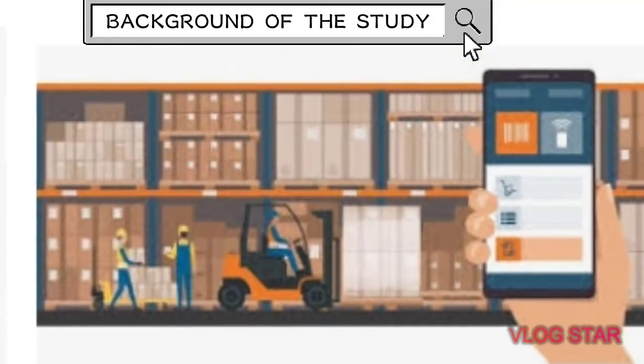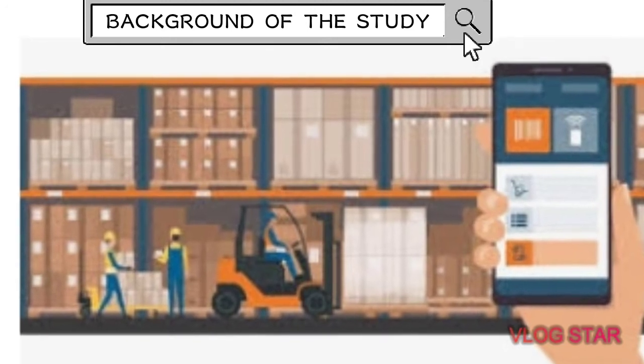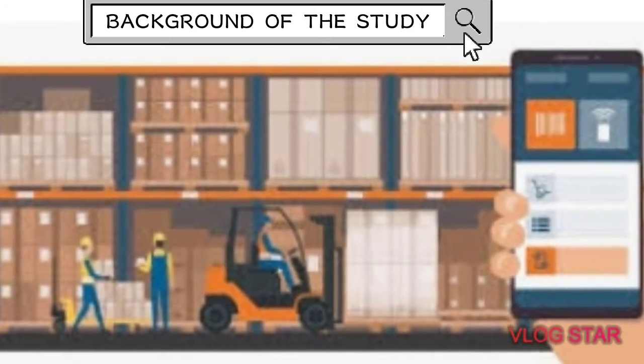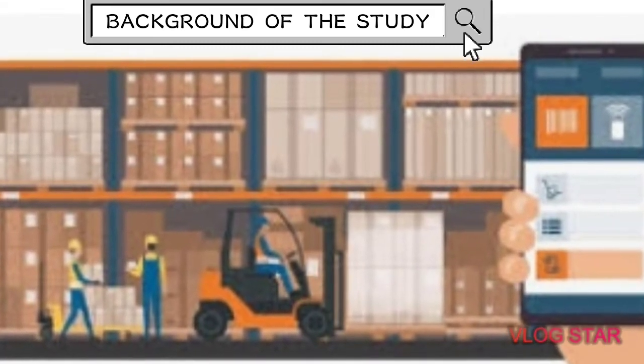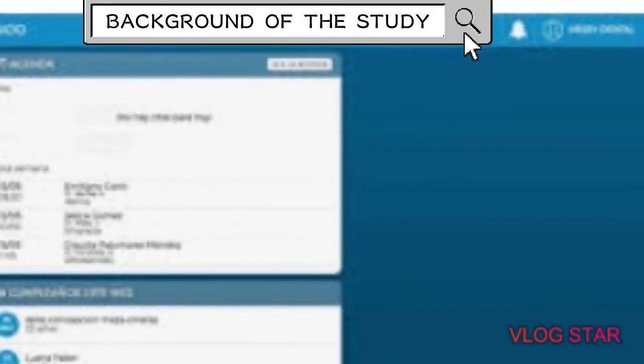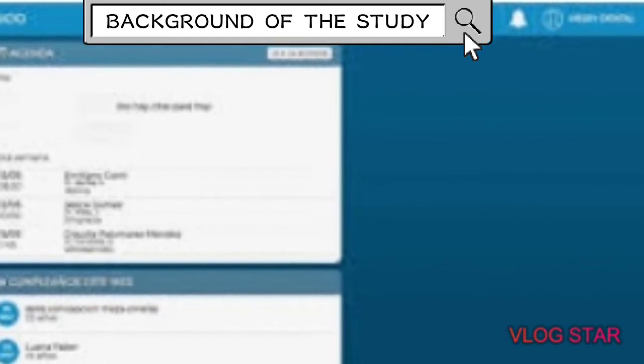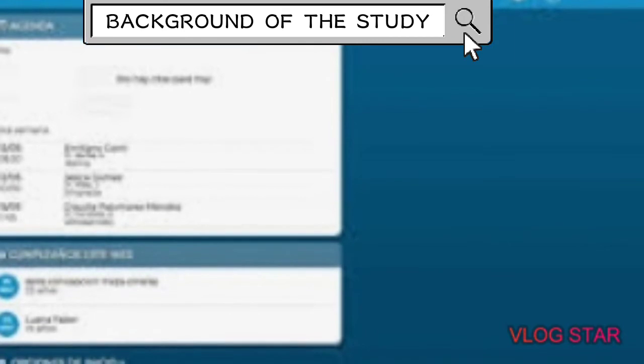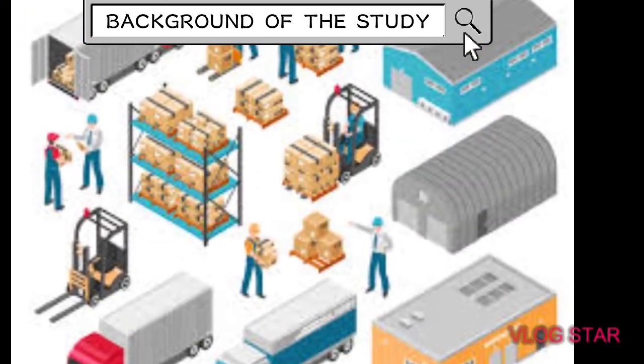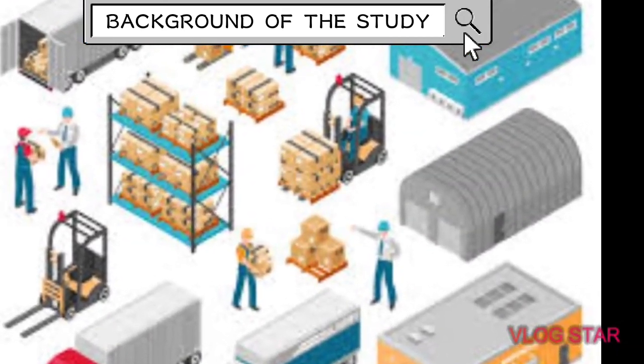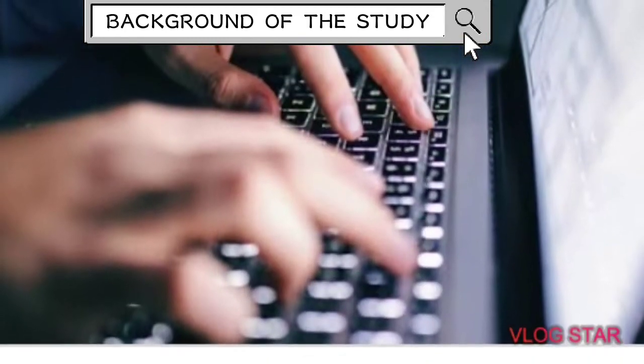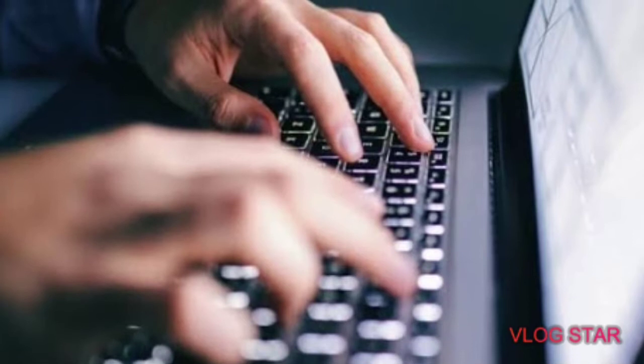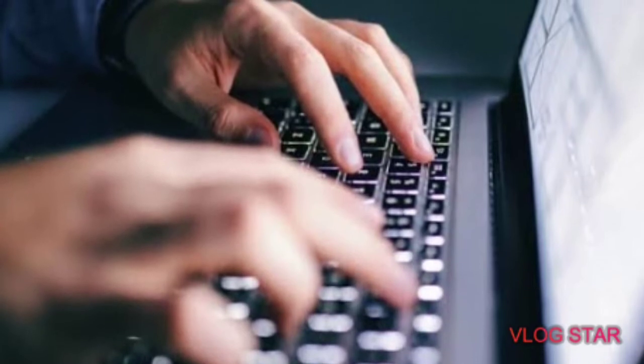returns and reports. According to Kotler 2000, stock management refers to all activities involved in developing and managing the stock levels of raw materials so that adequate supplies are available and the cost of over or under stocks are low. In this study, the researcher will innovate a system that will be used by a store firm in managing its systems and supplies.